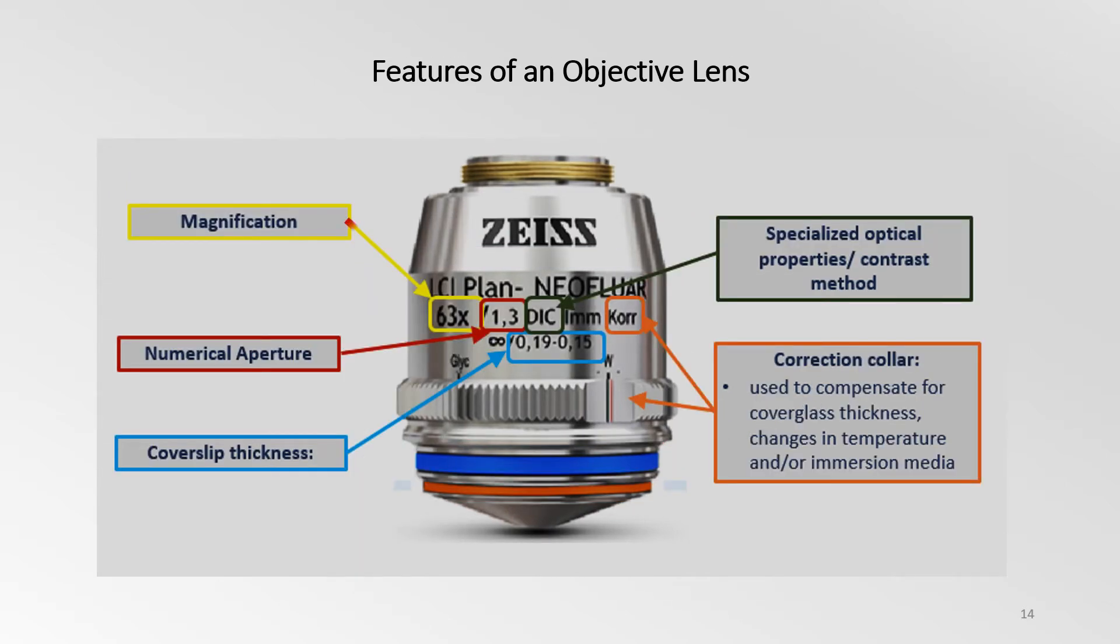The magnifying power of an objective is indicated by magnification. Numerical aperture is a critical value that indicates the light acceptance angle, which in turn determines the light gathering power, the resolving power, and the depth of field of the objective.